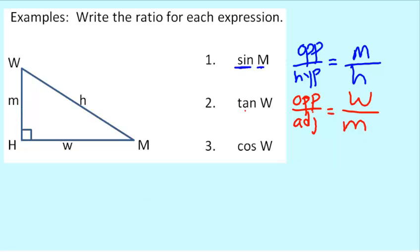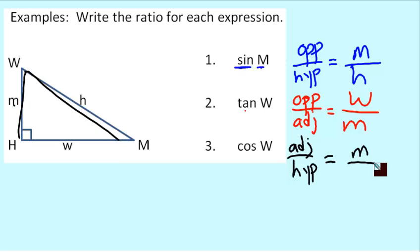Alright, well, cosine is adjacent over hypotenuse. Here's angle W. Its adjacent side we know already is side lowercase m. And the hypotenuse, we already know, is side H. And there's your cosine ratio for that particular angle.